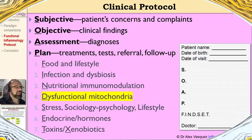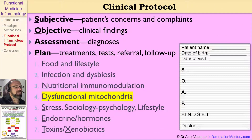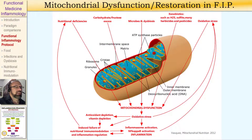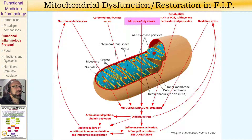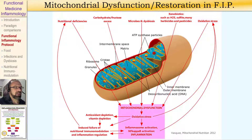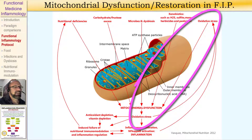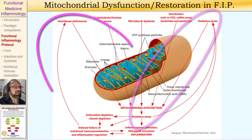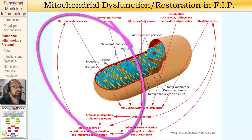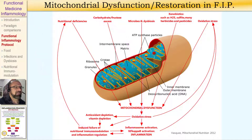Let's go on now to component number four, which is dysfunctional mitochondria and also metabolic dysfunction. As you can see here from my diagram, nutritional deficiencies, carbohydrate and fructose excess, exposure to microbes and dysbiosis, xenobiotics such as herbicides and pesticides, and also oxidative stress — all of these contribute to mitochondrial dysfunction, which then increases the production of free radicals. This increased production of free radicals leads to antioxidant and vitamin depletion, which then leads to nutritional deficiencies, which then promote mitochondrial dysfunction — and obviously a vicious cycle here.